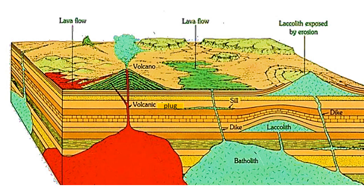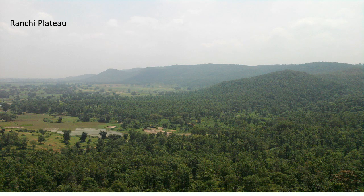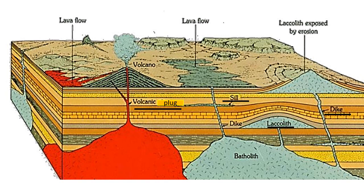First, we will learn about batholiths. Deep inside the Earth, magma solidifies in a very large region covering about 100 square kilometers. They are usually dome-shaped with no definite floor and their side walls are very steep. They form the core of mountain ranges. Batholiths can be exposed on the surface due to intense weathering and erosion. Bathos means depth. They are mainly composed of granite. An important example is the Ranchi Plateau batholith.